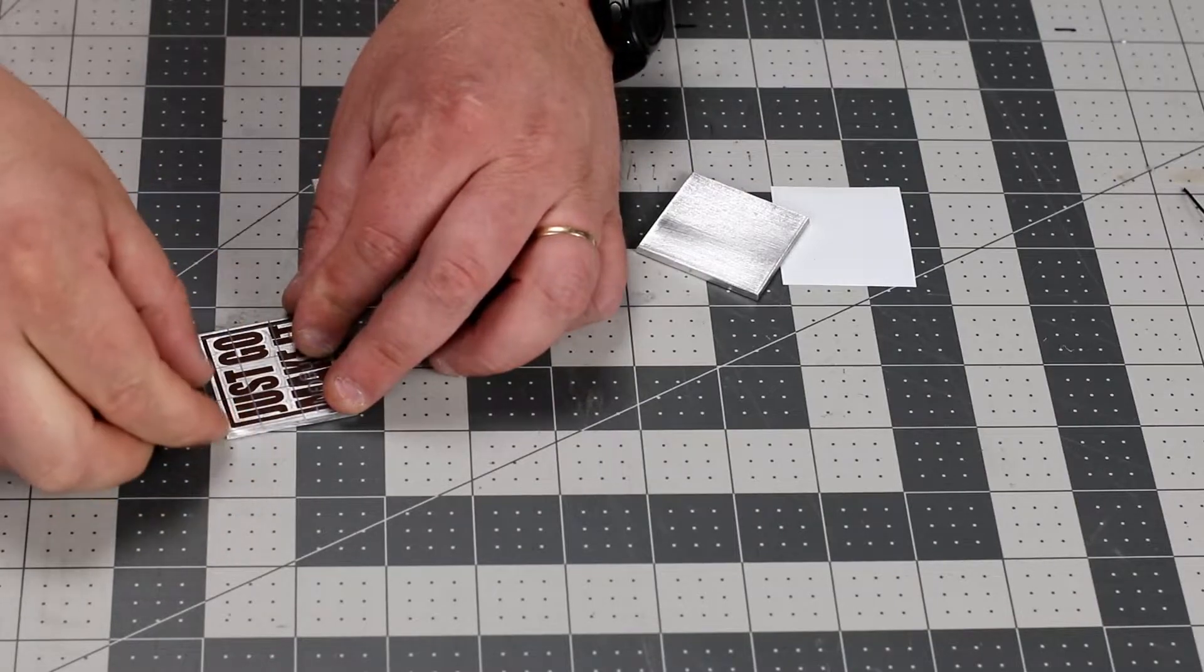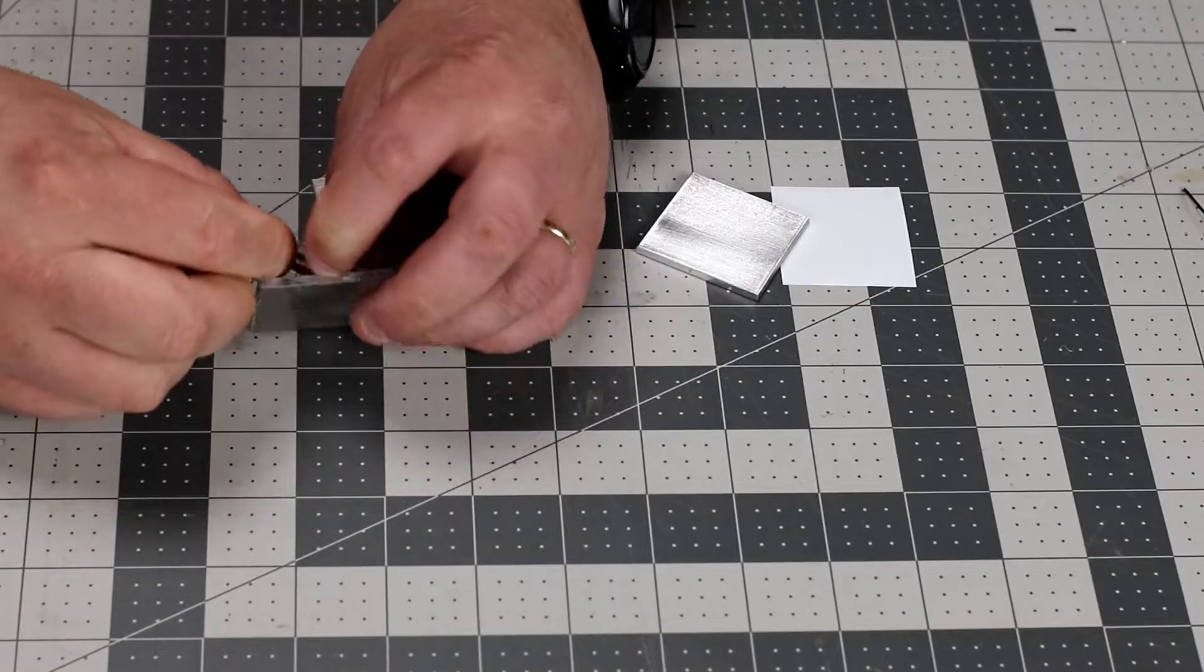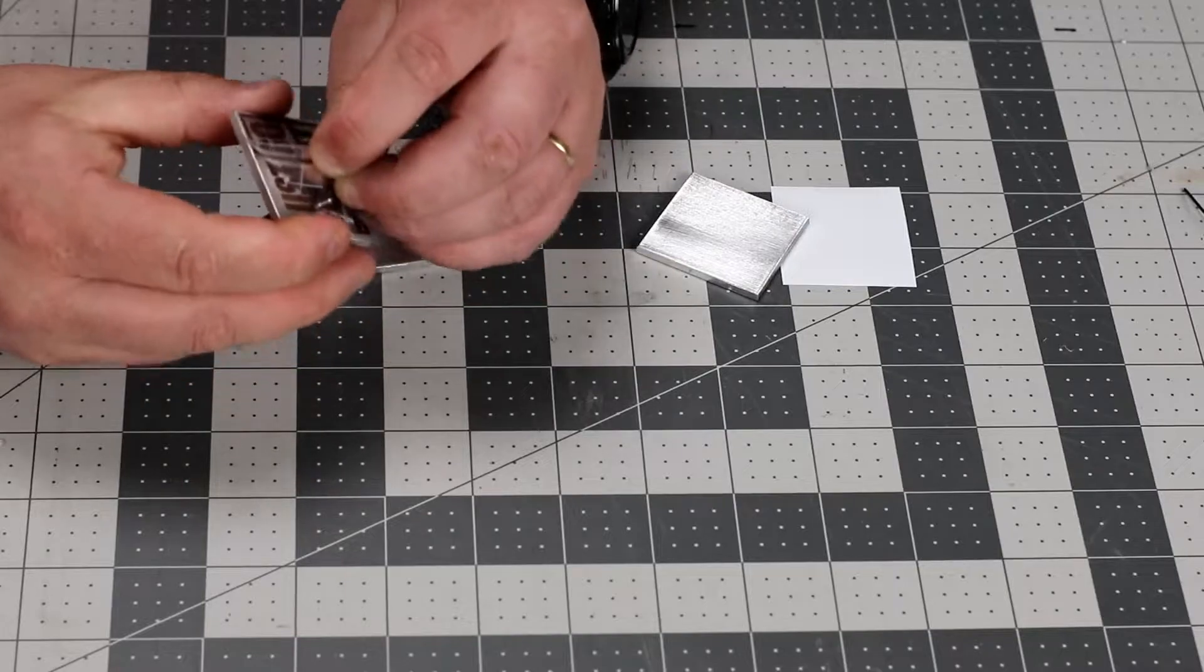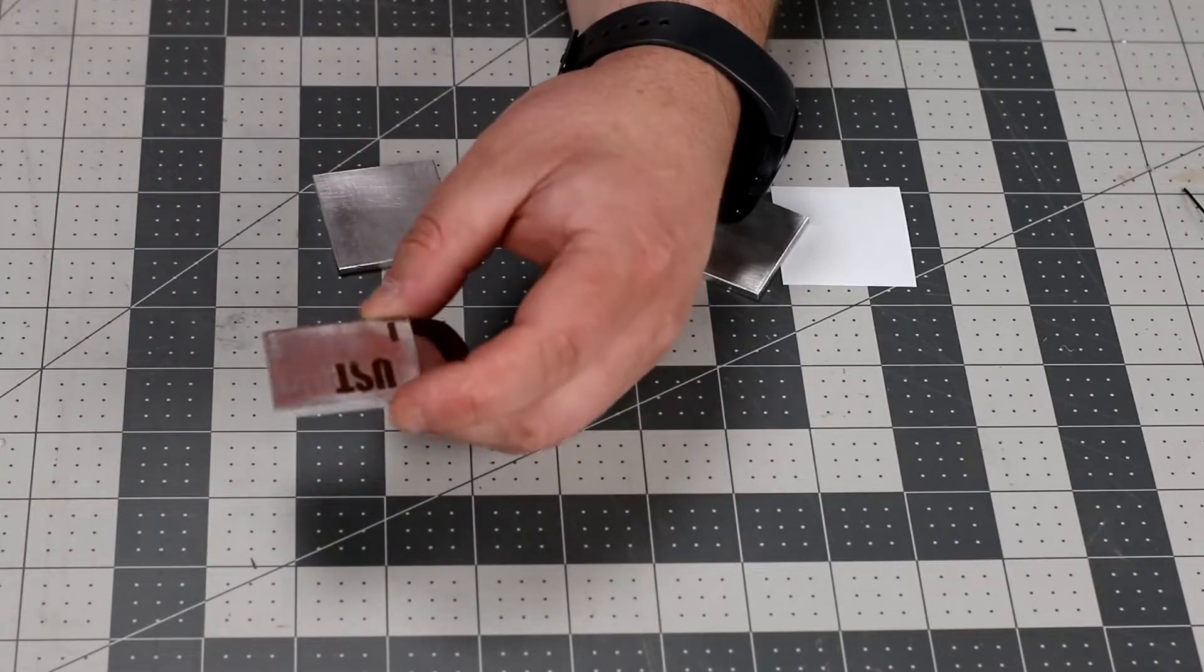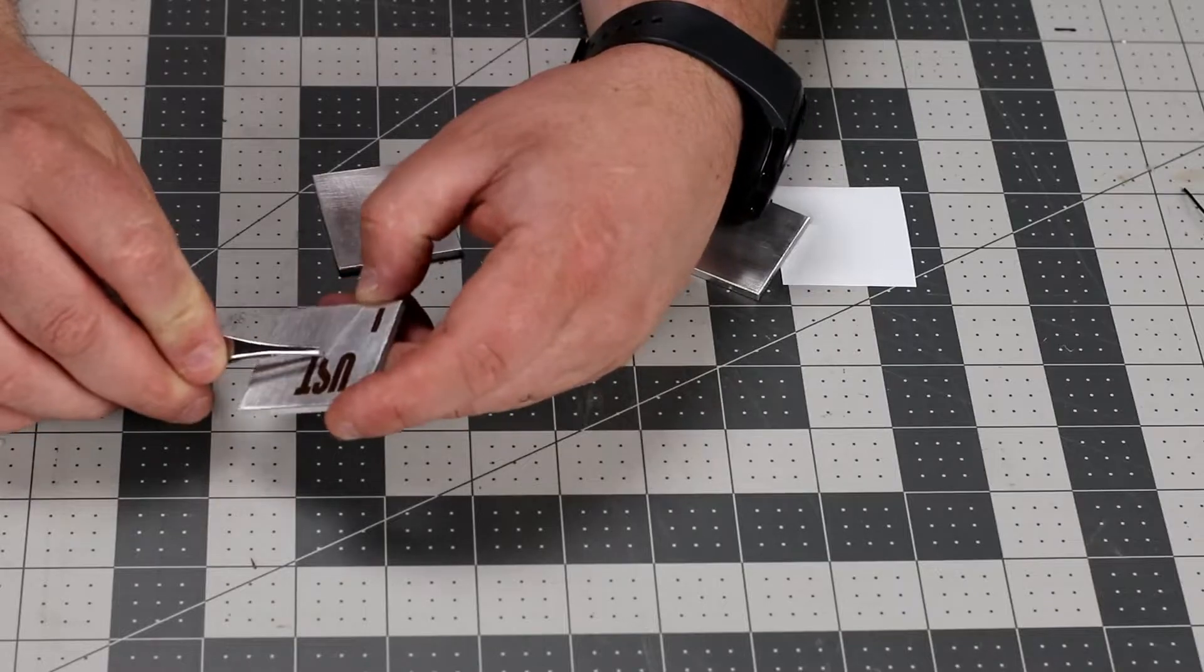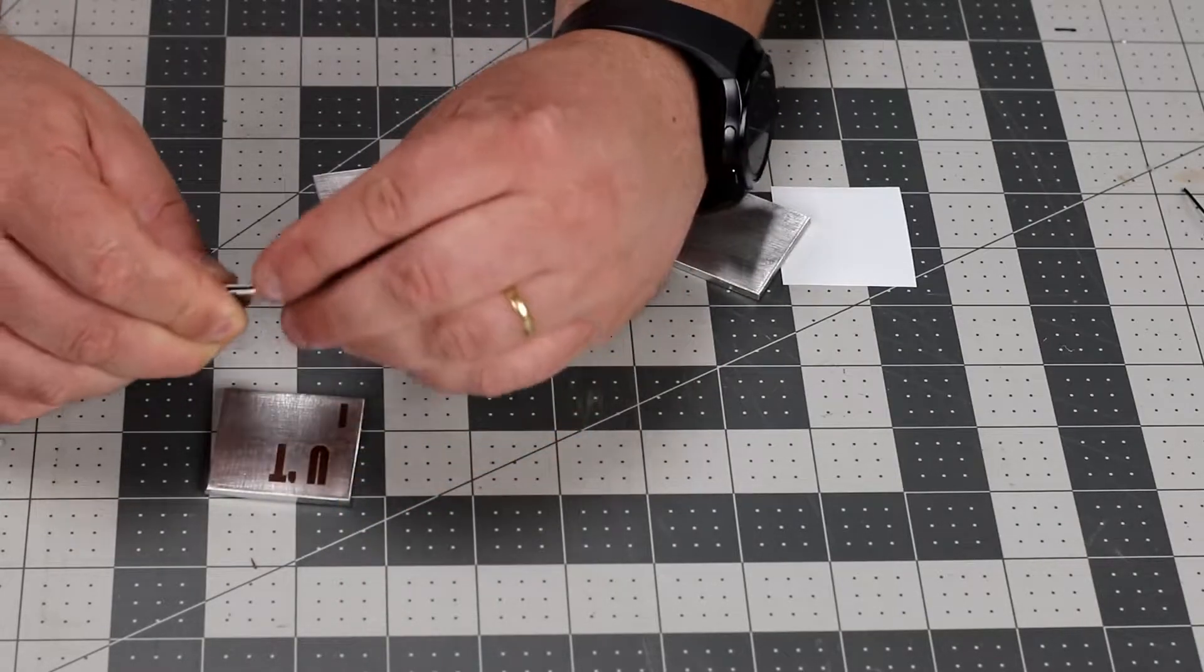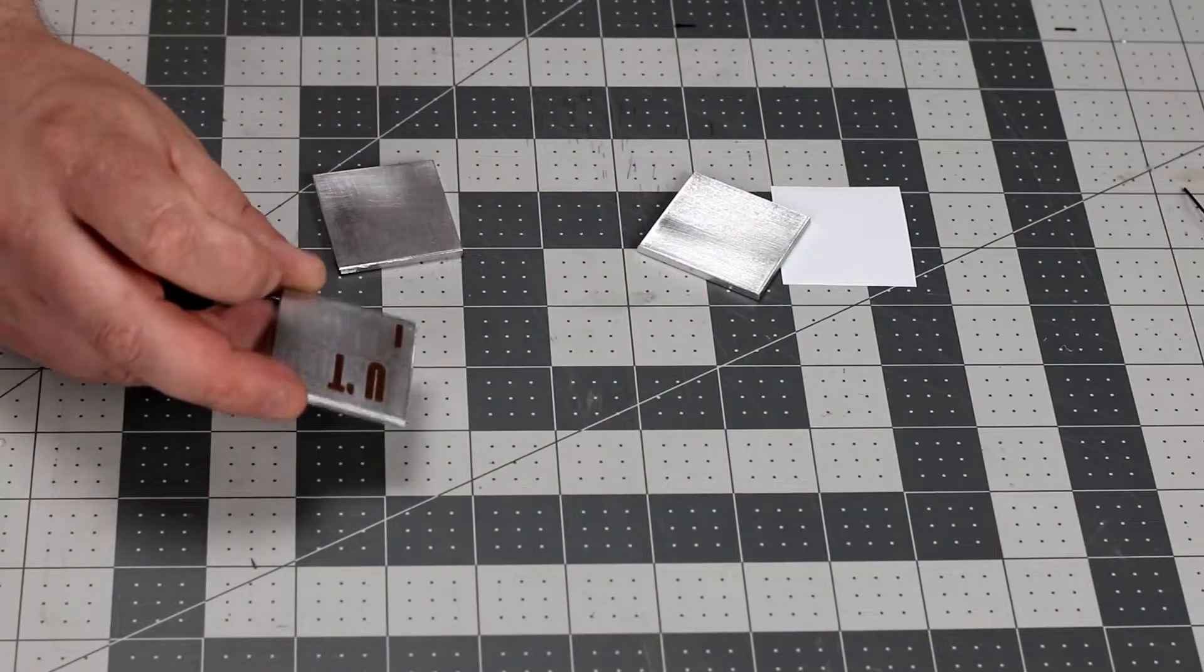I'm going to peel off the transfer tape. Are you kidding me? Oh come on. Well that's not going to work apparently that transfer tape is too strong for the vinyl I used. That was a fail.